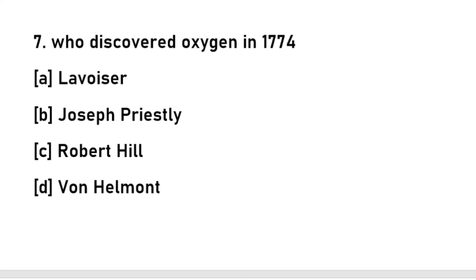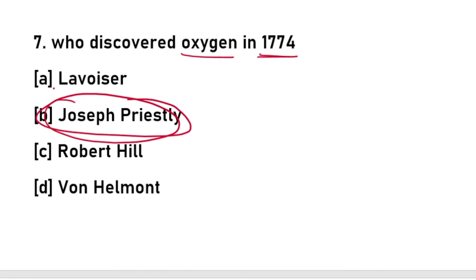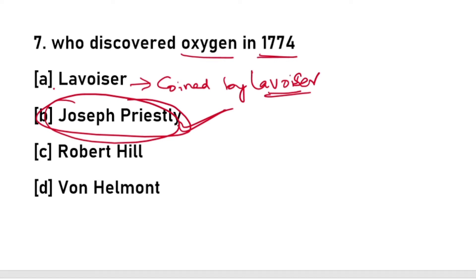Seventh question: who discovered oxygen in the year 1774? The answer is Joseph Priestley. Joseph Priestley discovered oxygen, and the term oxygen was coined by Lavoisier.